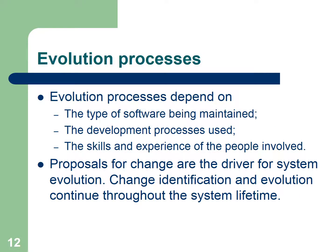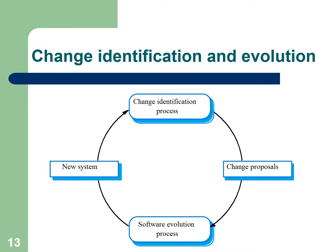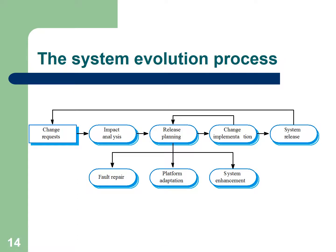Evolution processes depend on: the type of software being maintained, the development process used, and the skills and experience of the people involved. The important driver for system evolution is change. Change implementation and evolution continue throughout the system lifecycle. The system evolution process is shown in this figure.